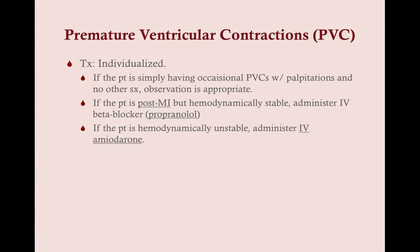If the patient is post-MI and hemodynamically stable, administer IV beta blockers — which you'd be giving any post-MI patient anyway. IV beta blockers should help; you may increase the dosage if PVCs persist. If the patient is hemodynamically unstable — say they're having bigeminy — we give them the same thing as for VTAC: IV amiodarone.